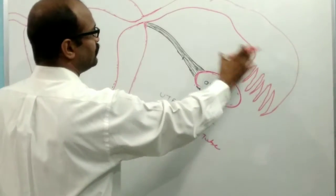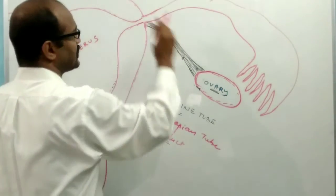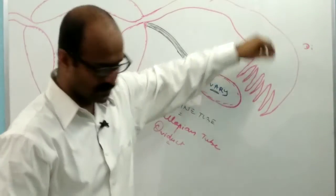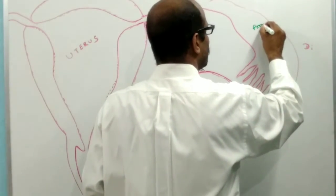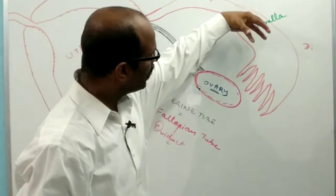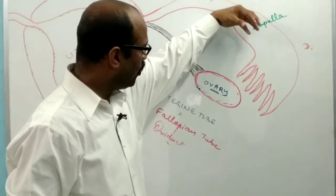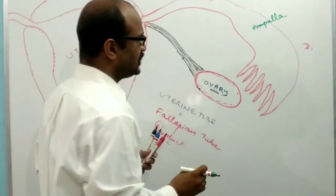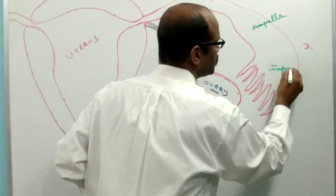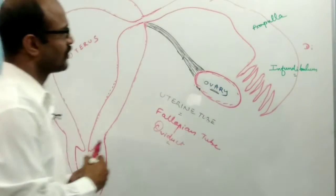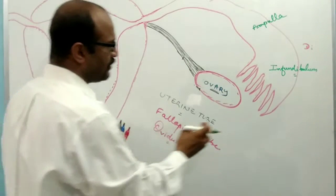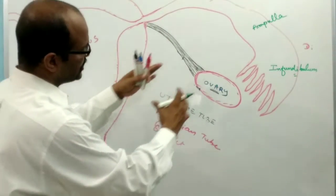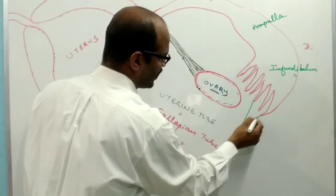This portion is known as the proximal part and this is the distal part. The distal portion of the fallopian tube expands and forms the ampulla. This ampulla curves towards the ovary and forms a funnel-shaped structure known as the infundibulum. The margin of the infundibulum is provided with many ciliated finger-like projections that droop over the ovary — these are known as the fimbriae.